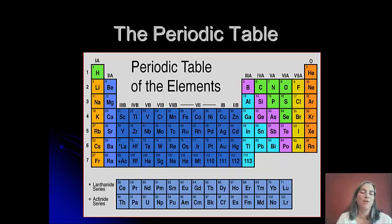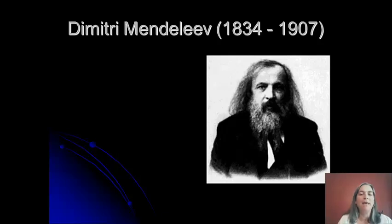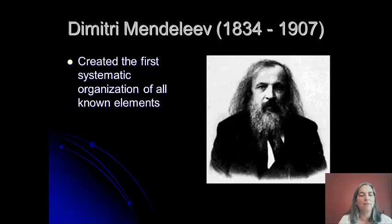Today we're going to talk about the periodic table. You've seen the one in the classroom and you also have one in your reference table. Let's look at it with a little more depth. The gentleman who gets credit for discovering the modern periodic table was Dmitry Mendeleev, a Russian scientist who lived in the mid to late 1800s and early 1900s. What he did is he made a little card for each of the known elements of the time and then developed the first systematic organization of all those elements.